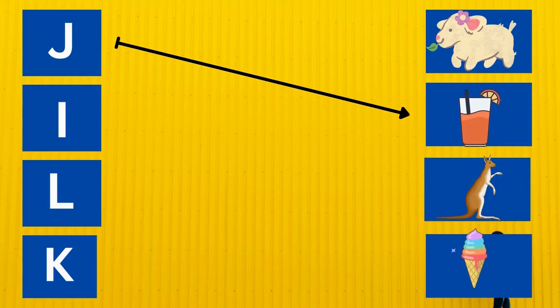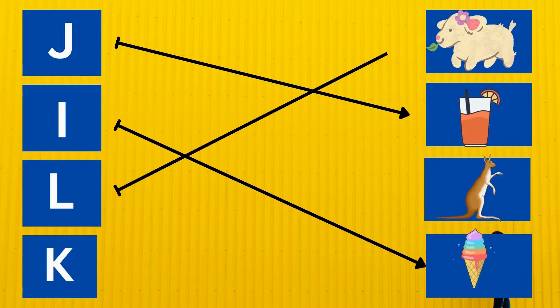J is for juice. I is for ice cream. L is for lamb. K is for kangaroo.